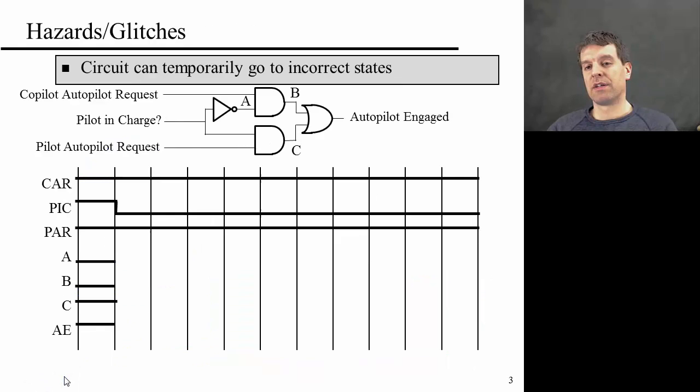So why does this matter? It would actually be really important, as we'll see, in the context of sequential circuits or circuits with feedbacks. But we'll introduce this idea here already. So because of these gate delays, a circuit that is logically correct can actually temporarily go into incorrect states.